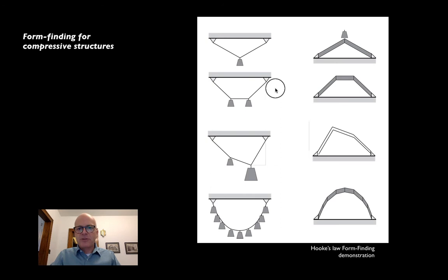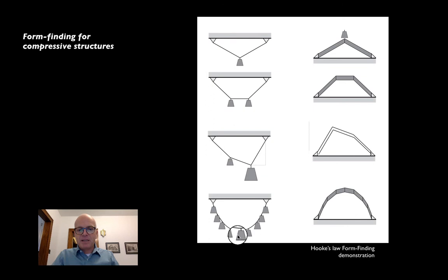If we add two weights we get a trapezoid; if we load them unequally we get an irregular trapezoid. Finally, if we add a distributed load — the same weight at regular intervals along the arch — we come closer and closer to what's called a catenary shape, the shape of a hanging chain. If we think about each weight being hung at every possible point along the chain, we get this perfect funicular catenary shape that serves equally well as a compression arch.